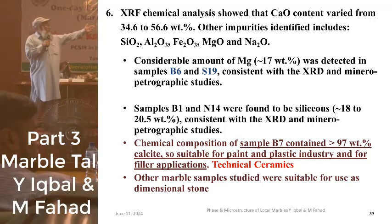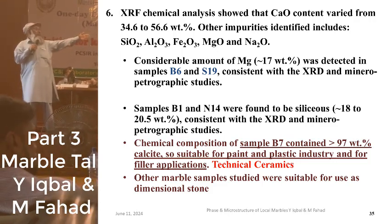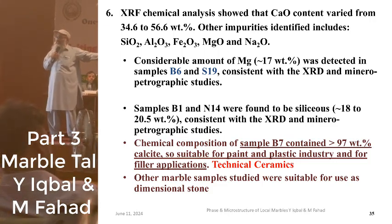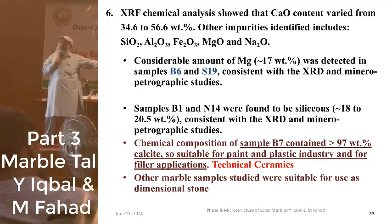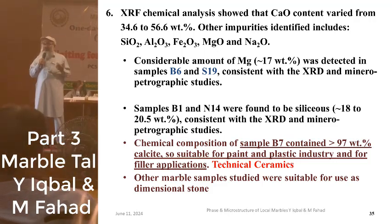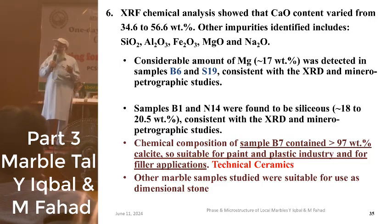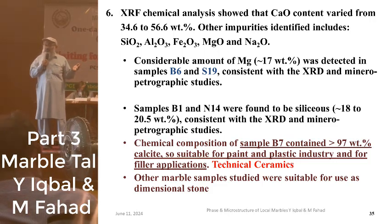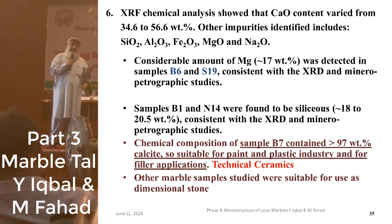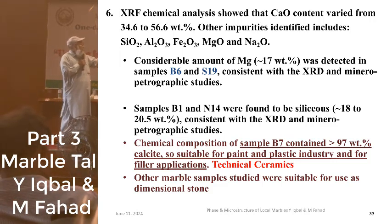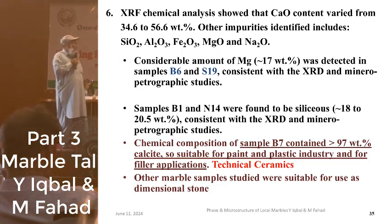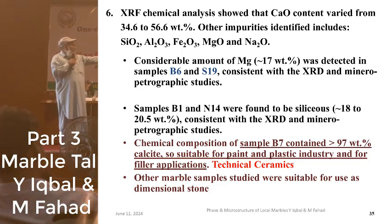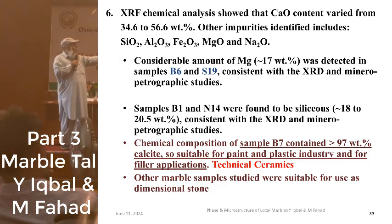XRF analysis showed that the calcite content varied from 13.4 to 56%. The 56% was the Bambuha sample designated as B7, and our analysis showed it has 97% calcite — some claim above 98%. So it has the potential to be upgraded for highly technical applications. Considerable amounts of magnesium were present in B6 and S19, and a siliceous percentage was also noted in some samples.